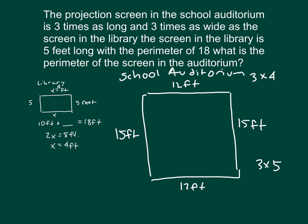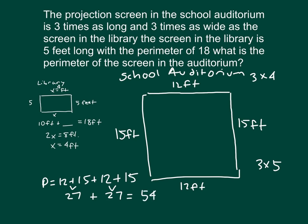To find the perimeter, we just add these up: twelve plus fifteen plus twelve plus fifteen. Twelve plus fifteen is twenty-seven, and this twelve plus fifteen is also twenty-seven. When we add twenty-seven and twenty-seven together, we get fifty-four feet — that is the perimeter of the screen within the school's auditorium.